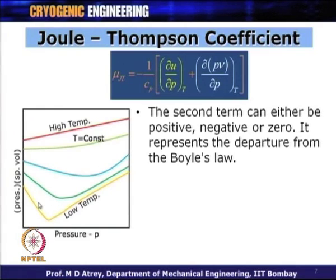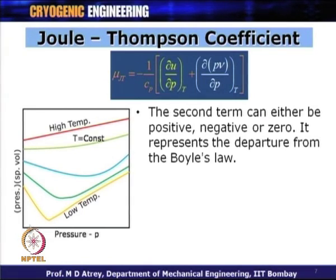In the region where PV decreases with decreasing pressure, del(PV) by del P is positive. But in another region, PV increases when pressure decreases, so del(PV) by del P is negative. For cooling, since we want mu_JT to be positive, we need del(PV) by del P to be negative, which helps make mu_JT a positive quantity.